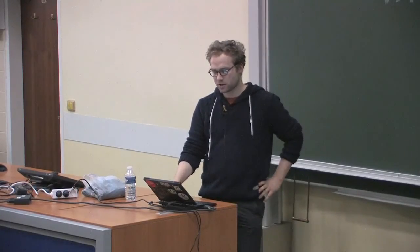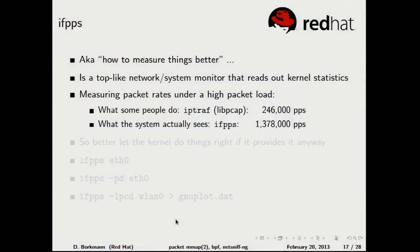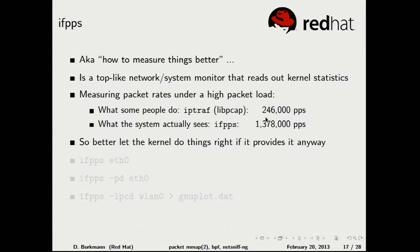ifpps is a tool to read procfs and display useful networking statistics. Some people use iptraf, which uses pcap to capture traffic and analyze it, but that approach is costly — on high load it can falsify your statistics due to overhead. With ifpps you will see the accurate 1.4 million packets per second where iptraf would show a false number. It also displays interrupt and software interrupt counts per second and can output gnuplot data if you want to plot something.